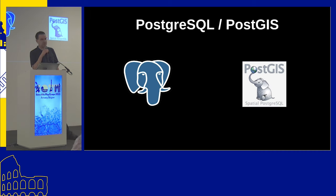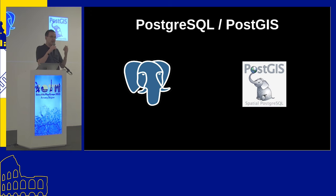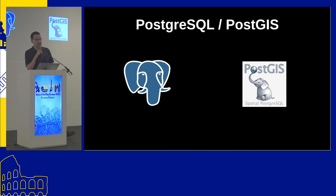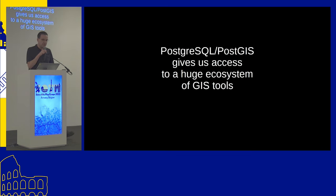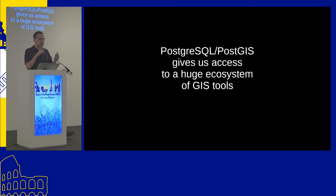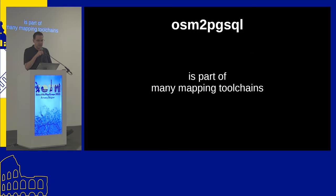PostGIS is a plugin for PostgreSQL that adds geo functionality, so objects can have geo types like lines and polygons, and there are functions to work with those. PostgreSQL and PostGIS together give us access to a huge ecosystem of GIS tools that do all sorts of things with geographical data — that's why osm2pgsql is interesting.